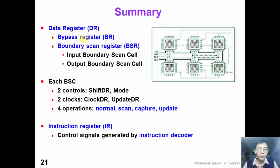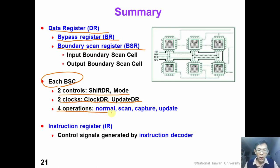In summary, in this video we introduced the data register, which consists of bypass register and boundary scan register. In each boundary scan cell we have two control signals — shift_DR and mode — two clocks, and we can support four operations: normal operation, scan, capture, and update. We also introduced the instruction register, which stores the instruction and provides it to the instruction decoder to generate control signals. Thank you for watching.